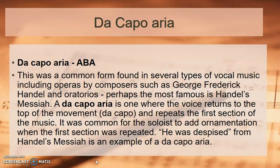The da capo aria (A, B, A) was commonly found in vocal music including operas by Handel and oratorios. Perhaps the most famous example is Handel's Messiah. The da capo aria is where the voice returns to the top of the movement — 'da capo' — and repeats the first section. It was common for soloists to add ornamentation when the first section was repeated.